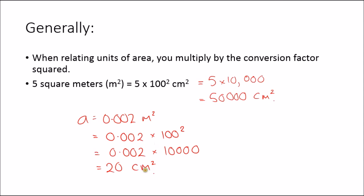That's much more sensible. When you talk about 20 centimeters squared, you can picture it — it's something like 4 centimeters by 5 centimeters, something we can actually think about. But when we talk about 0.002 meters squared, it's less easy to comprehend.